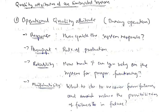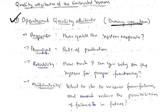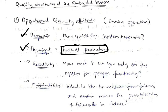Now, how do we determine the best quality embedded system? There are a few factors divided into two parts. The first is operational quality attributes — factors considered during operation. These include: response (it should respond quickly), throughput (the rate of production in a given time), and reliability (how much you can rely on the system for proper functioning).